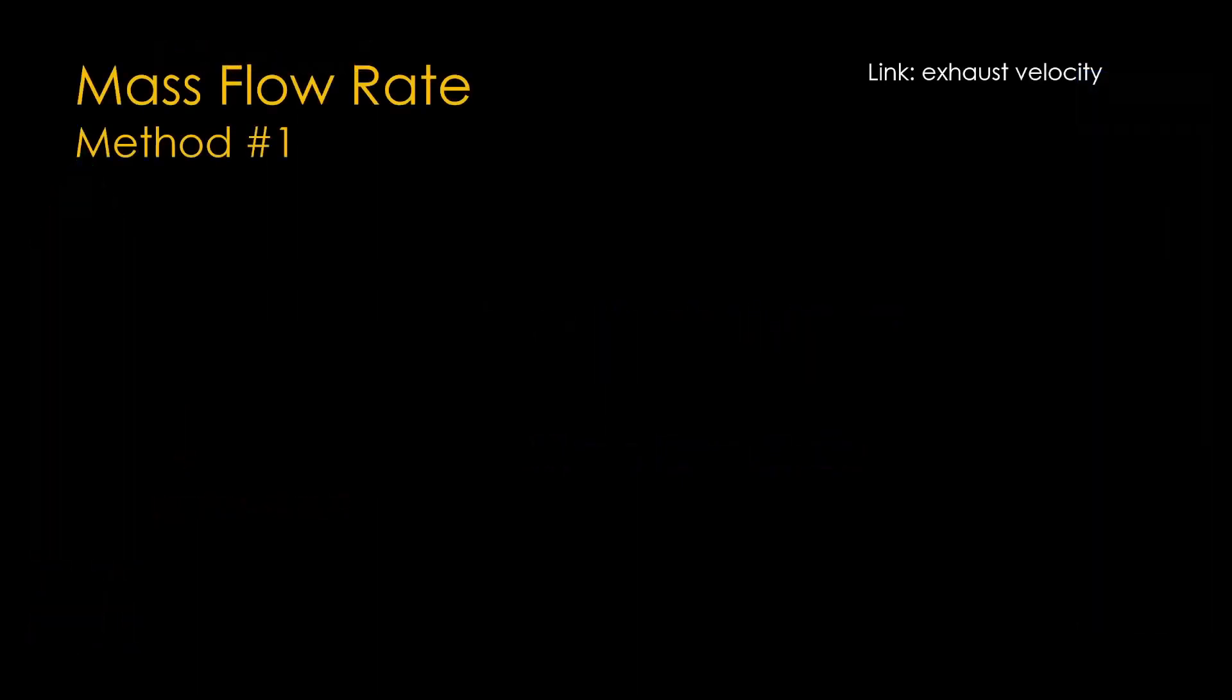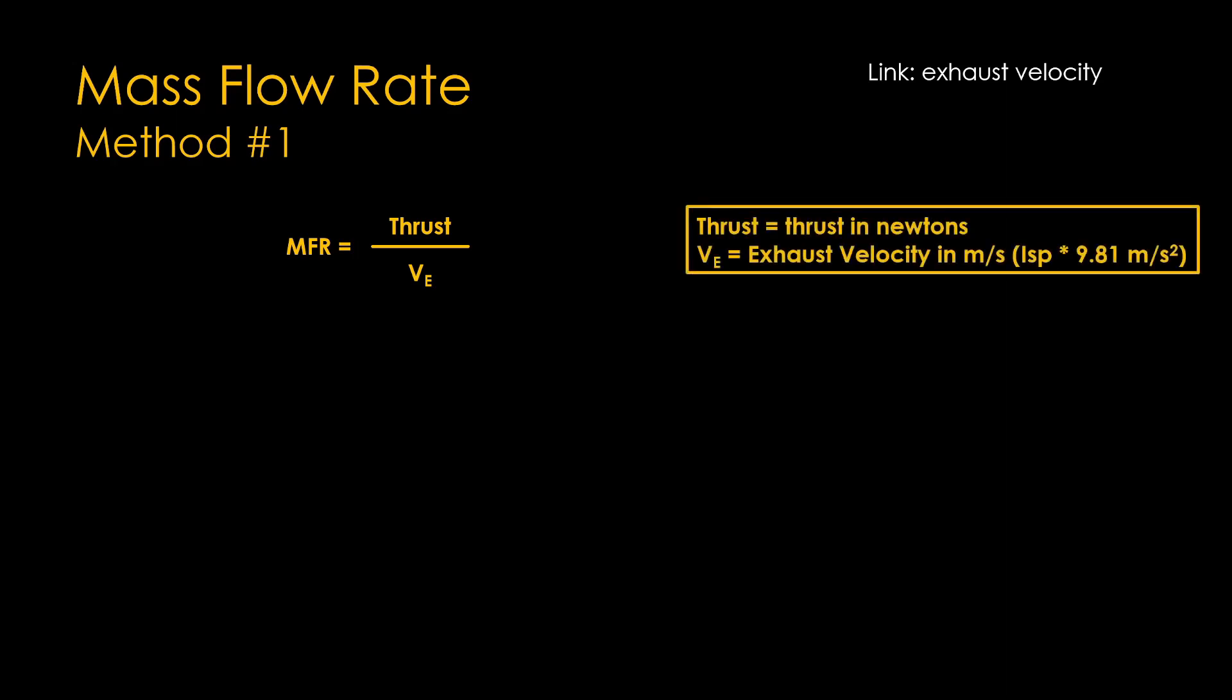In the first method, we calculate the mass flow rate from other factors. We will be talking about exhaust velocity and ISP. If you want to learn more, here is a link to a video on those topics. Mass flow rate is simply the thrust in newtons divided by the exhaust velocity in meters per second. You can determine the exhaust velocity by multiplying the ISP by g, or 9.81 meters per second squared. I'll be doing the math here with detailed units, so you can see how it works.